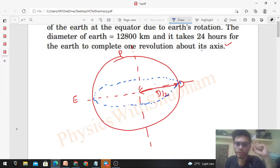The radius is d by 2. So what will be the value of acceleration? It is omega square into r, right? We know the value of r. Now we need to find omega.